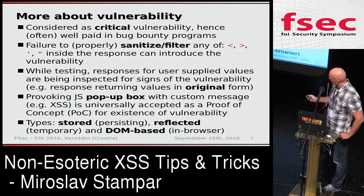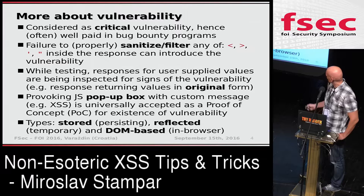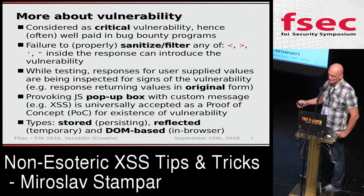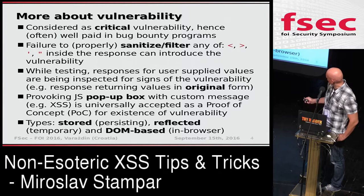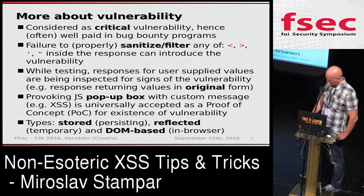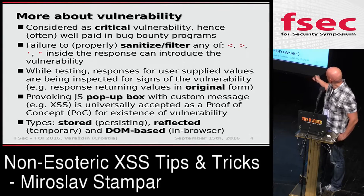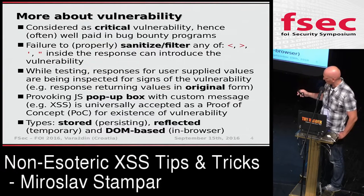These are some fundamental things about the vulnerability. It is considered as critical, so you'll get well paid in bug bounty programs. For example, if you are able to find cross-site scripting on top Alexa 100 sites, you'll get a couple thousand bucks. On Google, you can get from one thousand to ten thousand dollars just for this vulnerability. From the security perspective, it is a result of not proper sanitization or filtering of these basic characters. In 95% of cases, those same characters are responsible for the cross-site scripting attacks.